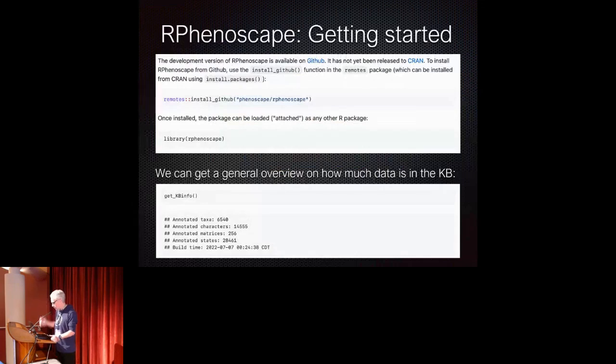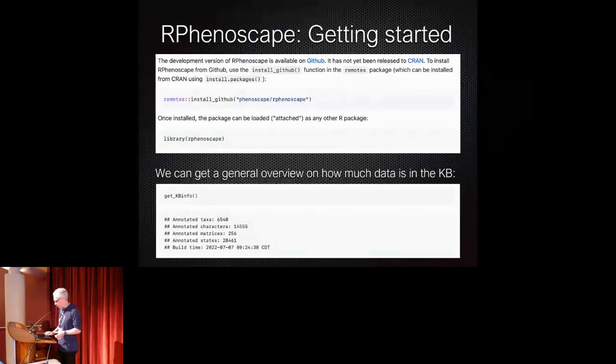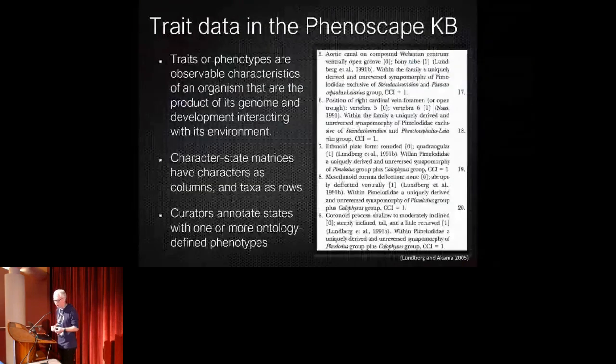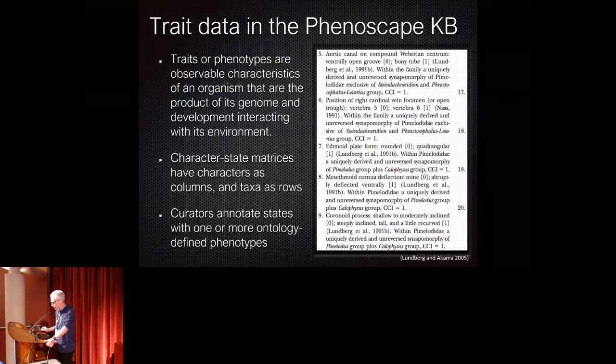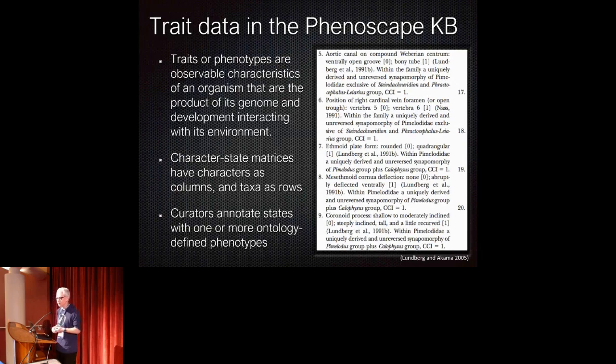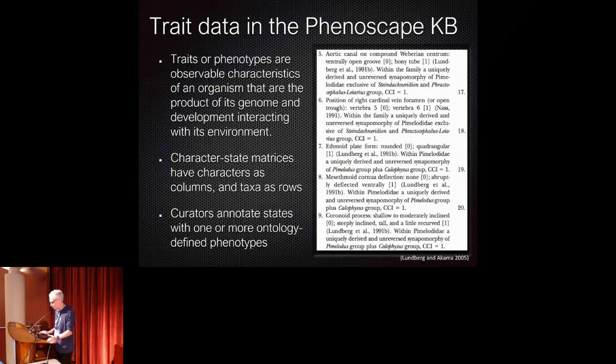So getting started for an R package just follows the usual step, except for now you have to install this from GitHub and not from CRAN, the comprehensive R archive network. And then you can get an overview, for example, about the data that's in there. And let me just clarify a little bit of the terminology here, because again, it's maybe a little bit unfamiliar for people in the genomics area. Again, trait data here, trait or phenotypes. I'm going to use the two terms pretty much interchangeably.